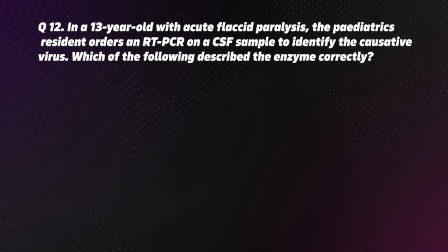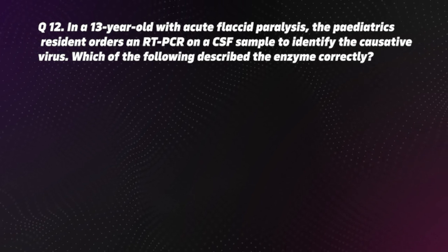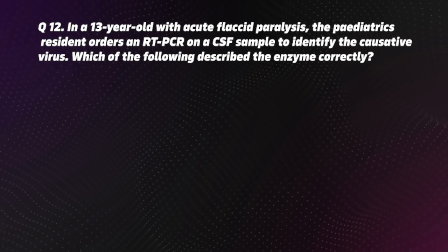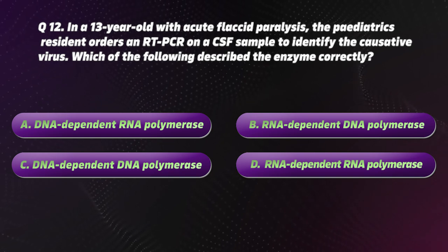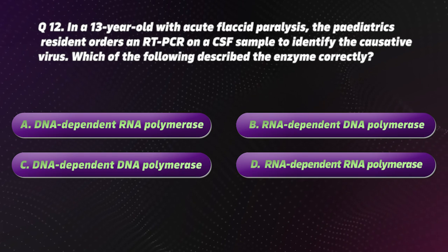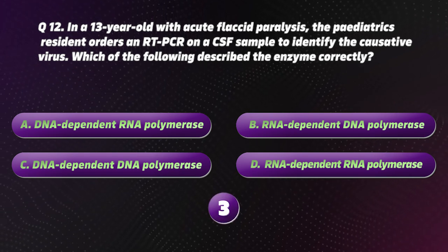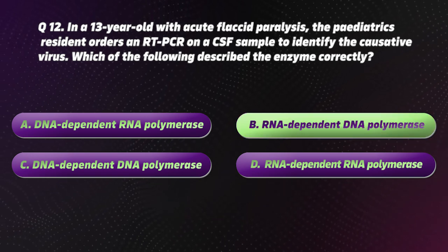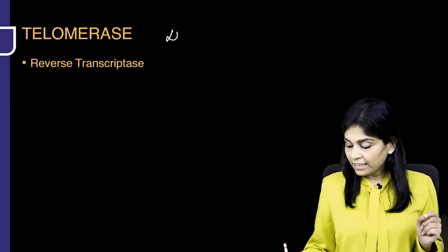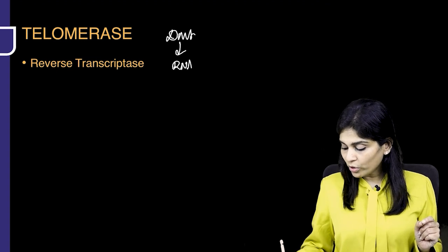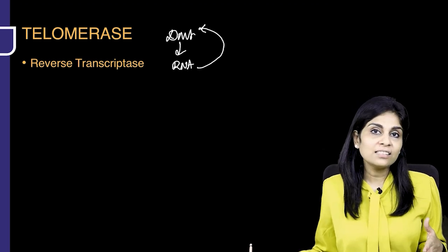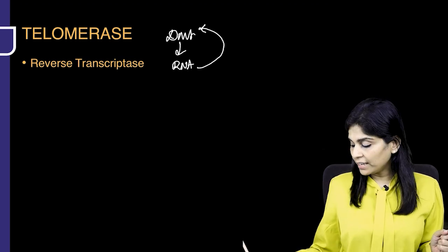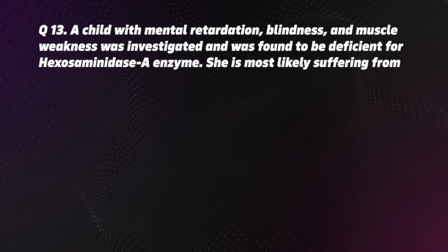Question 12. In a 13-year-old with acute flaccid paralysis, the pediatrics resident orders an RT-PCR on a CSF sample to identify the causative virus. Which of the following describes the enzyme correctly? Options: A. DNA-dependent RNA polymerase, B. RNA-dependent DNA polymerase, C. DNA-dependent DNA polymerase, D. RNA-dependent RNA polymerase. The correct option is B, RNA-dependent DNA polymerase. Reverse transcription is RNA to DNA, and RT-PCR uses an RNA-dependent DNA polymerase (reverse transcriptase).